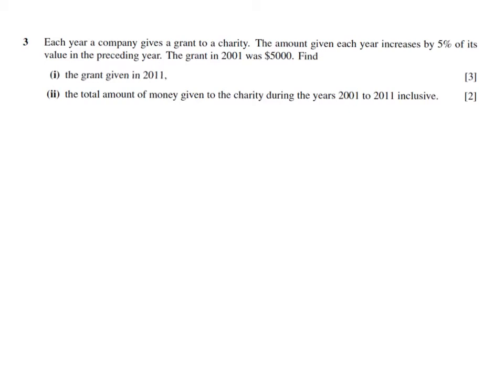So therefore, if it's 5%, what we have to do is 100% plus 5%. So that will give us 105. And divide this by 100. 105 divided by 100. So this is your multiplier, 1.05.